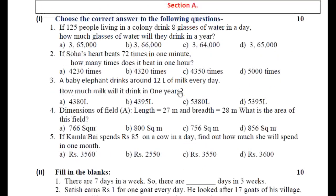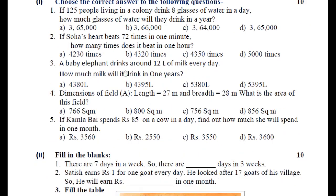Next question: Soha's heart beats 72 times in one minute. How many times does it beat in one hour? One minute में 72 times beat करता है और one hour में 60 minutes होते हैं, तो 72 और 60 का multiply कर दीजिए. आपको answer मिल जाएगा.